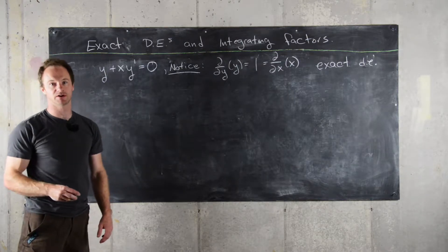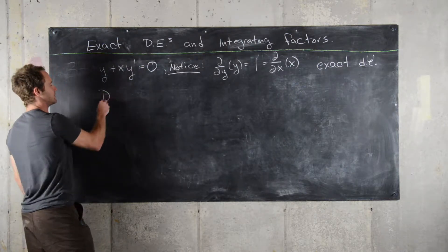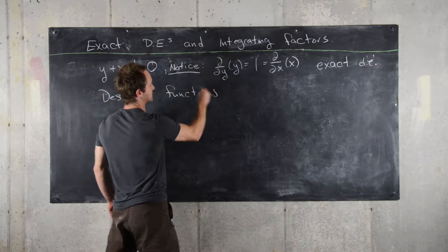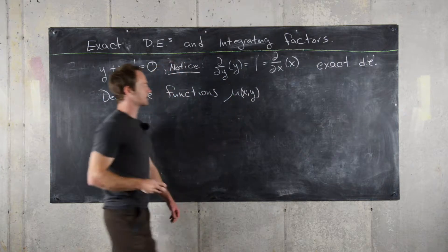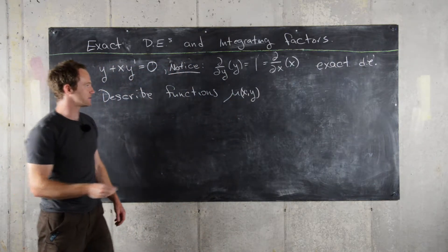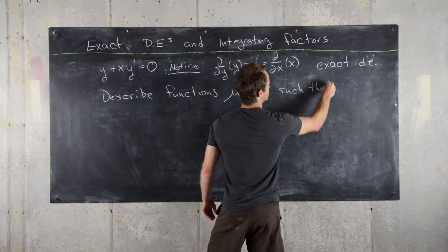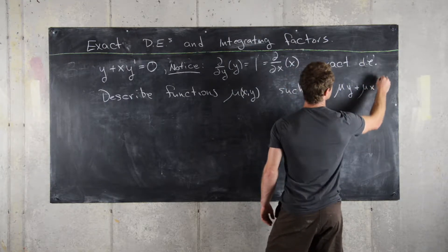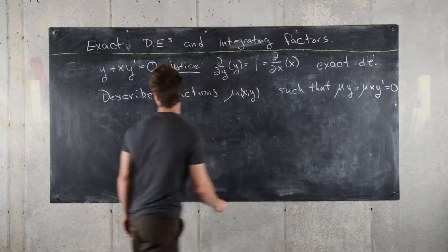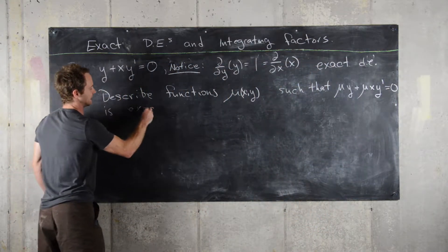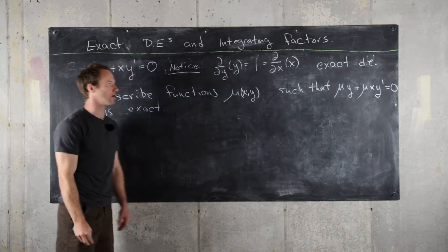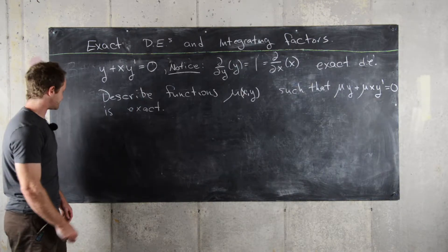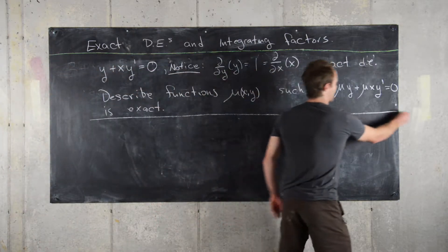Since it is exact, the next thing we want to do is describe functions μ(x, y) — functions potentially of two variables x and y — such that μ·y + μ·x·y' = 0 is exact, where I've suppressed the dependence of μ on x and y in the equation. Finding these functions μ is our next goal, and as an application we'll solve a related differential equation.